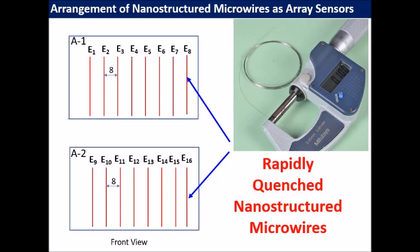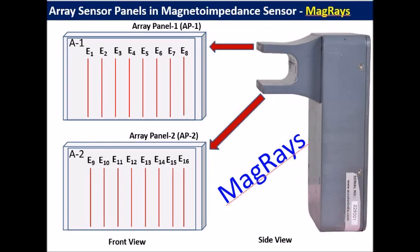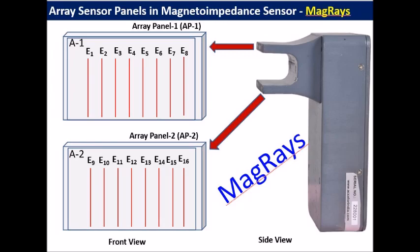The MAGRASE sensing device has an integrated probe as well as its control unit. The device can be operated independently or remotely controlled using a computer.